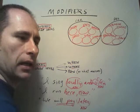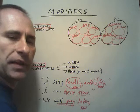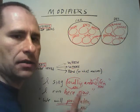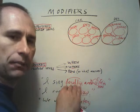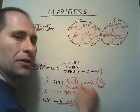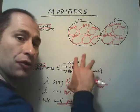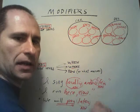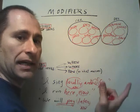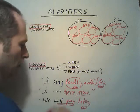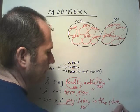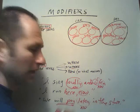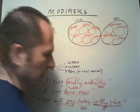One quick side comment: prepositional phrases are usually not considered adjectives or adverbs in their own right — we should label them simply as prepositional phrases. However, they always have an adjectival or adverbial function. Following common practice, we'll call prepositional phrases just that, while recognizing they almost always serve as adjectives or adverbs. For example, 'We will pay later in the store' — 'in the store' is a prepositional phrase that tells you where they'll pay, giving it an adverbial function, but we label it as a prepositional phrase.